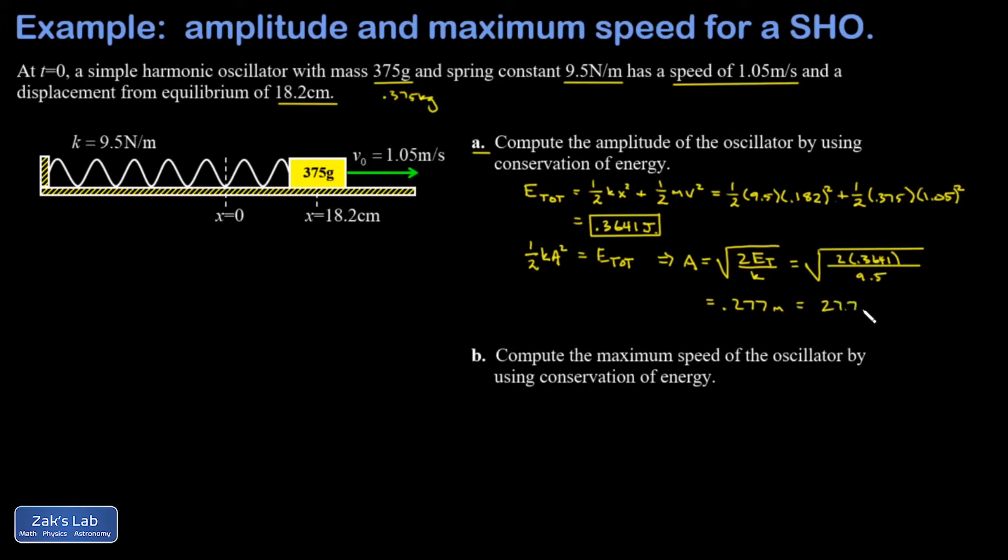In part b we're asked to get the maximum speed of the oscillator by using conservation of energy. The position we look at for this is the equilibrium position. When this mass is passing back through the equilibrium position, the spring is back to its natural length, there is no spring energy, all the energy is kinetic, and our speed will be maximized.